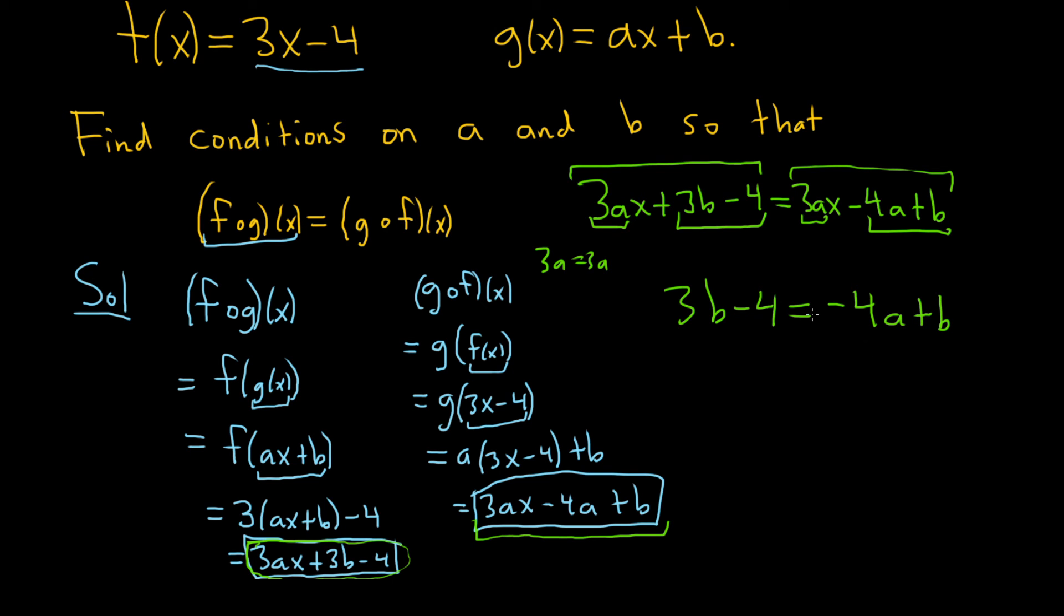But the constant terms must be the same. So 3b minus 4 must be equal to negative 4a plus b. And I guess now we can combine some like terms. Let's start maybe by subtracting b from both sides.